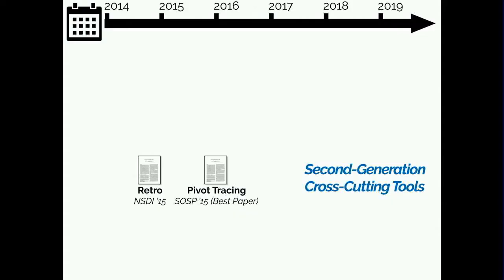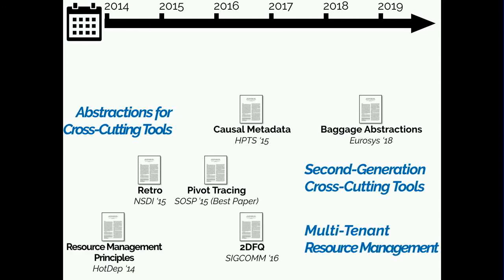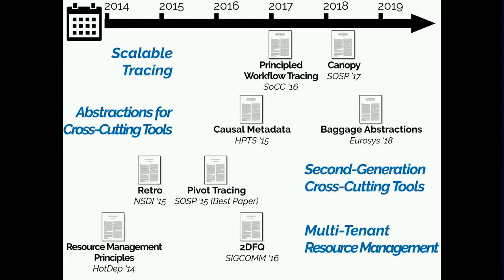Second generation cross-cutting tools have exciting directions touching on many different aspects of understanding and enforcing distributed system behaviors. Some of my further work has moved this vision forward by factoring out that end-to-end context as a general-purpose component of distributed systems, which I'll be presenting in April. These cross-cutting tools are one of several lines of research during my PhD. I've worked on both the tools themselves and on abstractions and designs that underpin second generation tools. Another theme has been resource management in multi-tenant distributed systems. The final theme has been scalability — one of the open challenges for many first generation cross-cutting tools — focusing on how to collect and analyze large volumes of end-to-end performance data.